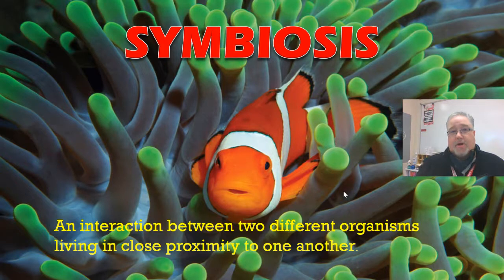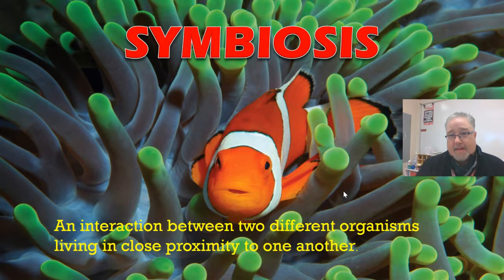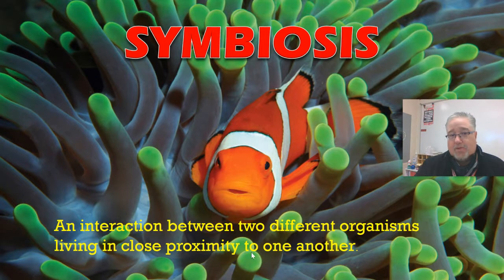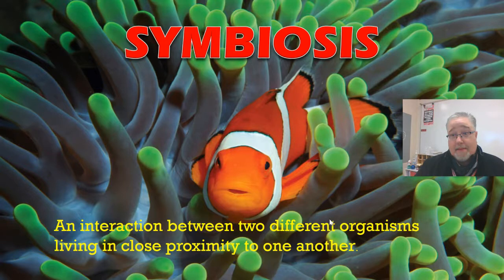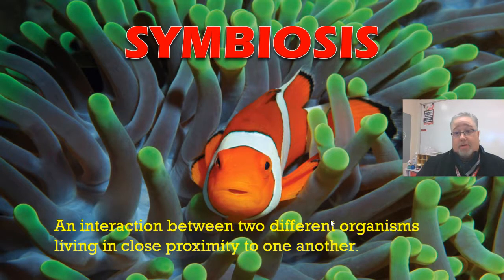Today we're going to start talking about some of these interactions between organisms. Since this is biology class, we'll focus more on the biotic stuff. Here's a term: symbiosis. Symbiosis means an interaction between two different organisms living in close proximity to one another. A good example in this picture is a clownfish and what we call a sea anemone — two organisms that live together in a close relationship. It's called symbiosis, a symbiotic relationship.